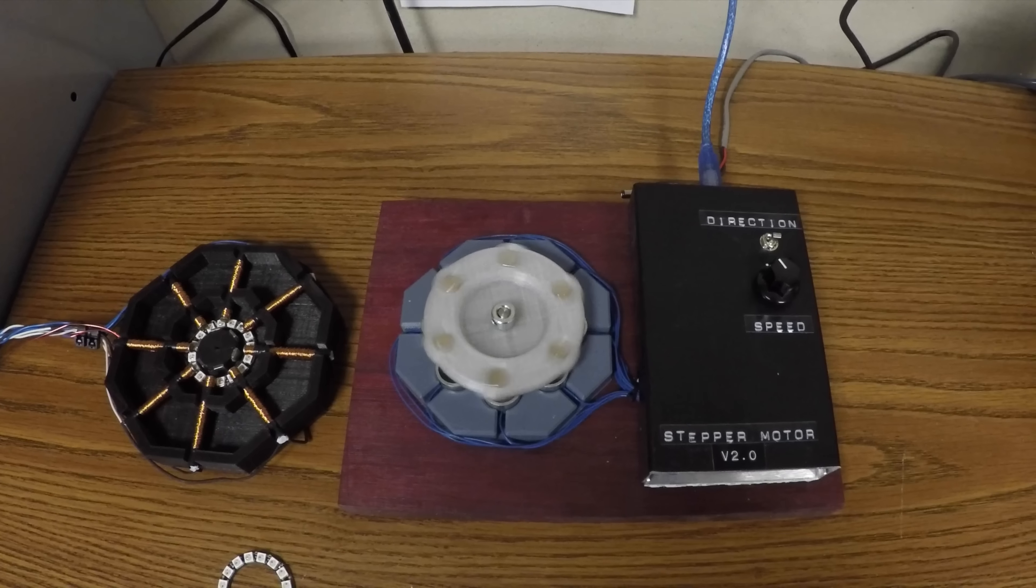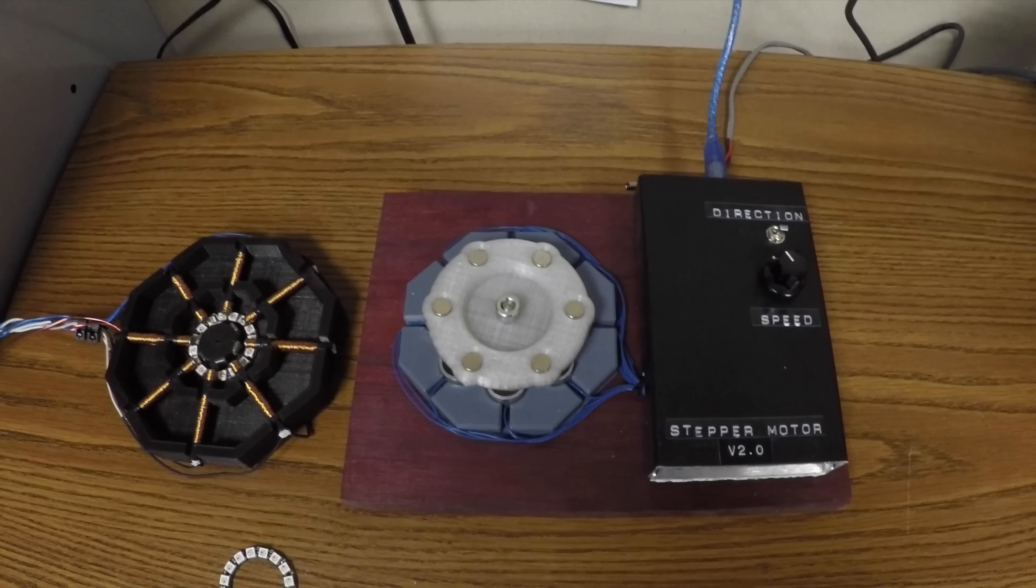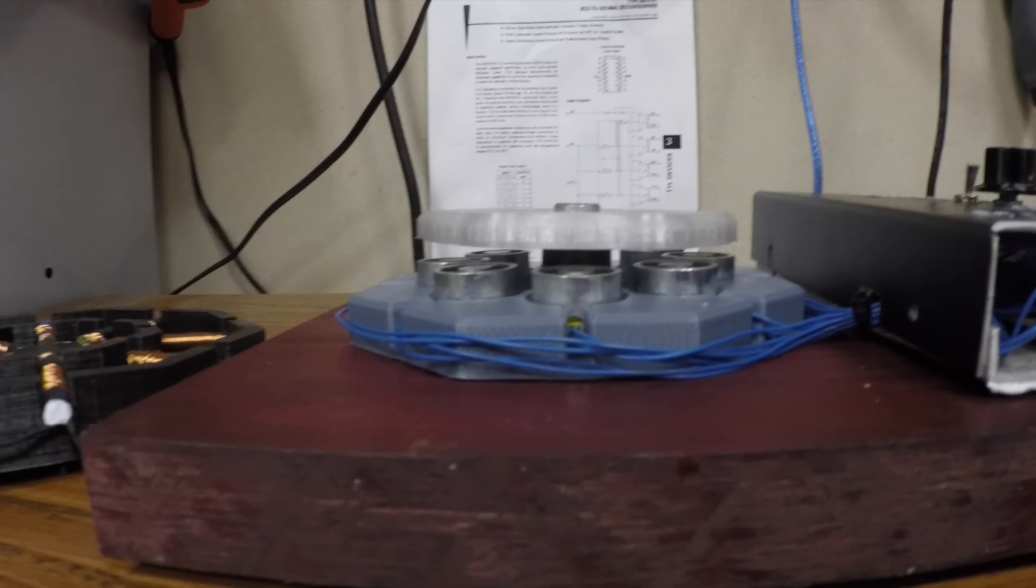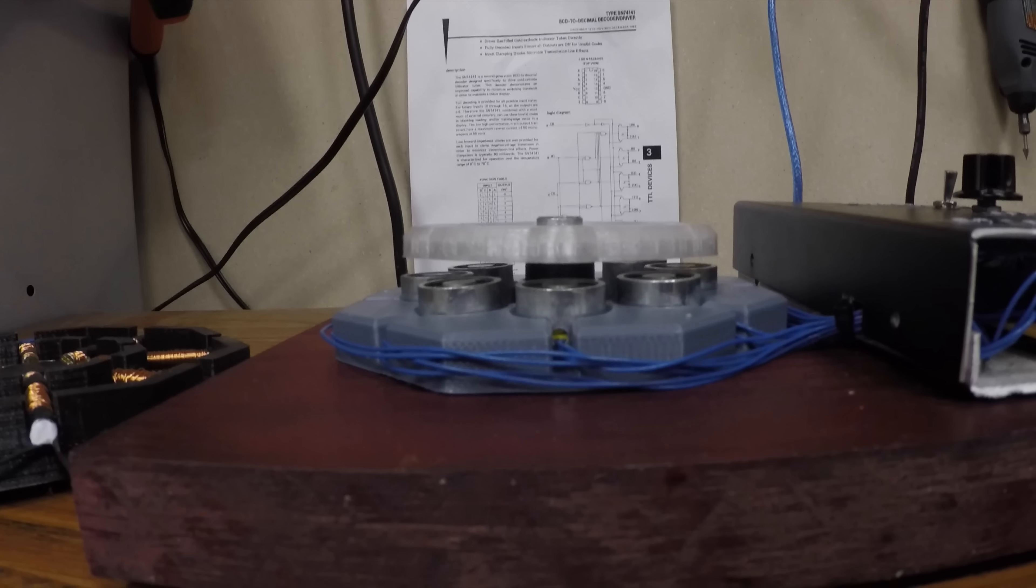You'll notice how the rotor is very unstable and it bounces a bit every time it takes a step. This is because the magnets were too attracted to the iron core of the electromagnets, so I had to increase the space between the stator and the rotor.